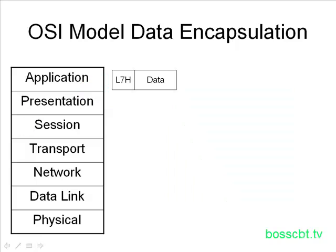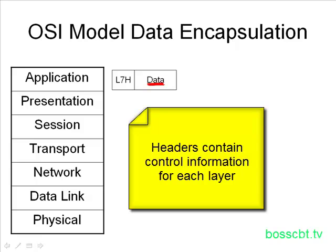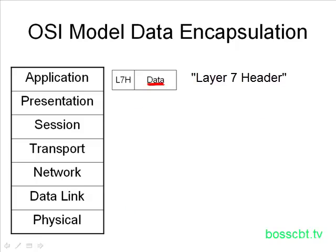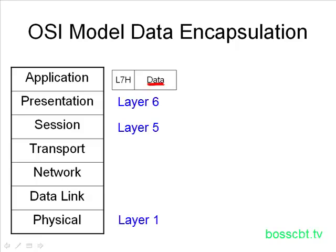We create our data and start with our original data. The application layer is going to prepend some management or control information, commonly referred to as a header — labeled L7H, which stands for Layer 7 Header. It's common practice to use the layer number instead of the name, so instead of saying 'application layer header,' we say 'layer 7 header.' The presentation layer is layer 6, the session layer is layer 5, all the way down to the physical layer, which is layer 1.